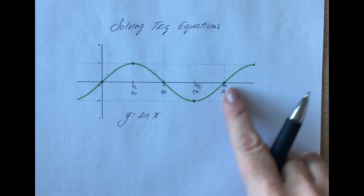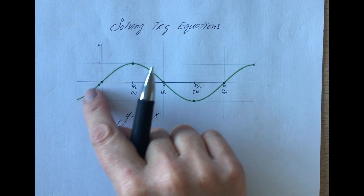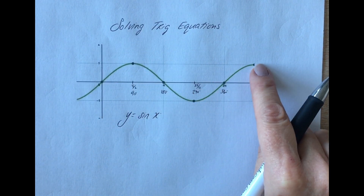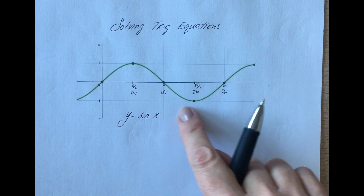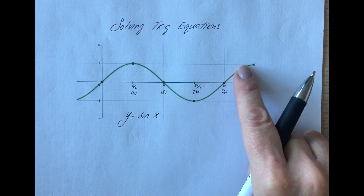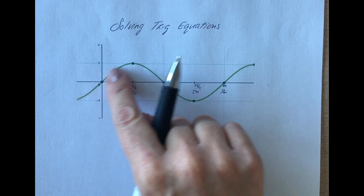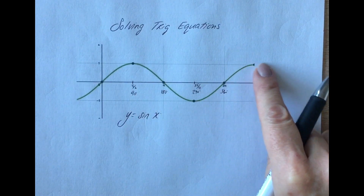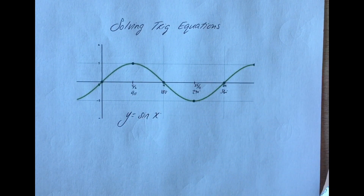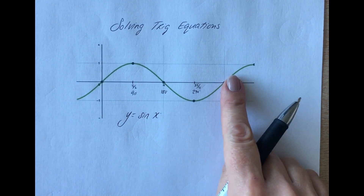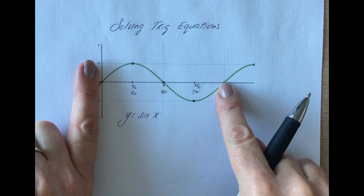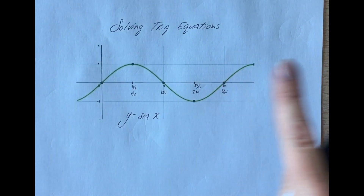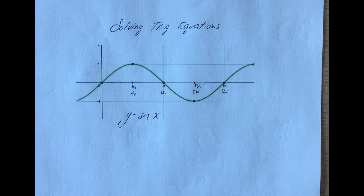Quick revision then. This is what the sine curve looks like. From that video lesson, we learned that this curve has this shape, and that shape repeats itself every 360 degrees — it will just repeat again and again.